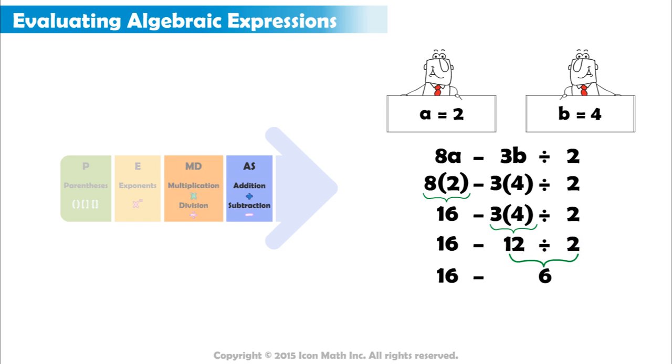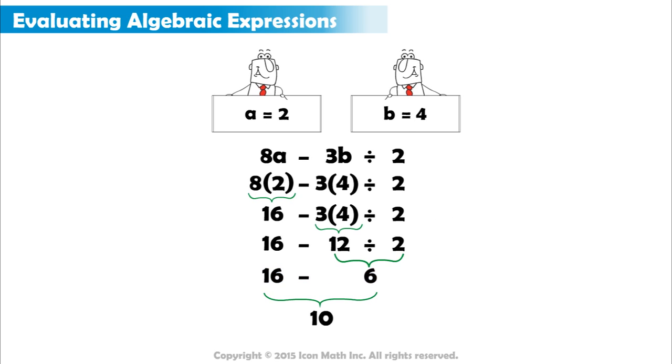The final step of order of operations is to perform any addition or subtraction in left to right order. 16 minus 6 equals 10. The value of this expression when A equals 2 and B equals 4 is 10.